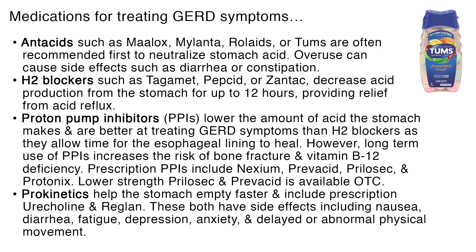However, long-term use of PPIs increases the risk of bone fracture and vitamin B12 deficiency. Prescription PPIs include Nexium, Prevacid, Prilosec, and Protonix. Lower strength Prilosec and Prevacid are available over-the-counter. Prokinetics help the stomach empty faster and include prescription Urecholine and Reglan. These both have side effects including nausea, diarrhea, fatigue, depression, anxiety, and delayed or abnormal physical movement.